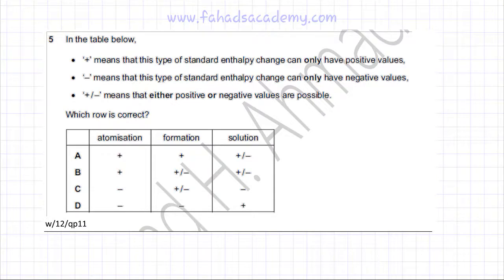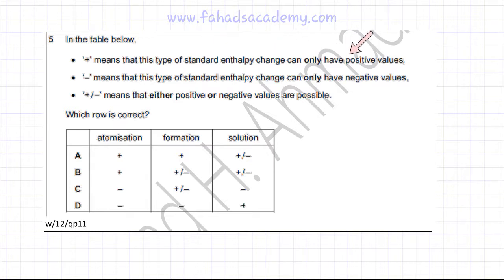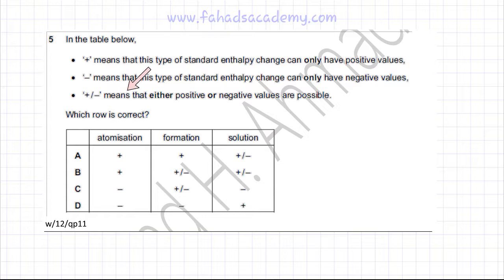This chemical energetics question deals with enthalpy and the definitions of different enthalpy changes. The question states that in the table: plus means the standard enthalpy change can only have a positive value, meaning endothermic; minus means it can only have a negative value, meaning exothermic; and plus-minus means either positive or negative values are possible. The question asks which row is correct.